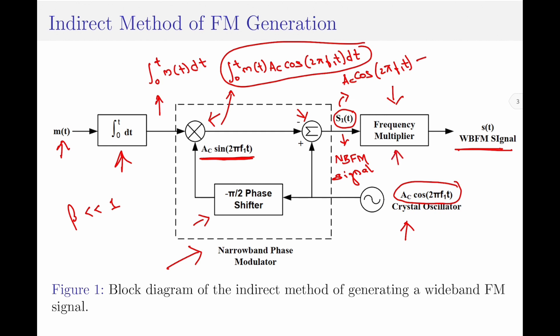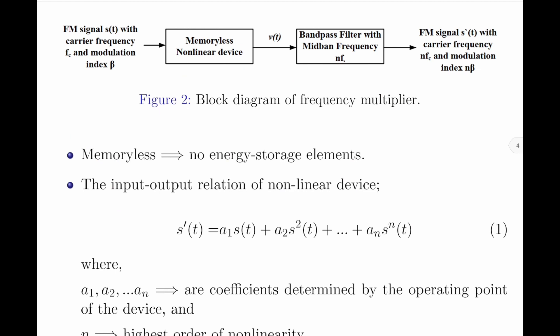Let us now discuss the frequency multiplier. Figure 2 shows its block diagram. The input to the frequency multiplier is an FM signal S(t) with carrier frequency fc and modulation index beta. This signal is fed to a memoryless non-linear device — meaning the device has no energy storage elements. The output of the non-linear device is then fed to a bandpass filter with midband frequency equal to n·fc. Therefore, the output of the bandpass filter is an FM signal S'(t) with carrier frequency n·fc and modulation index n·beta.